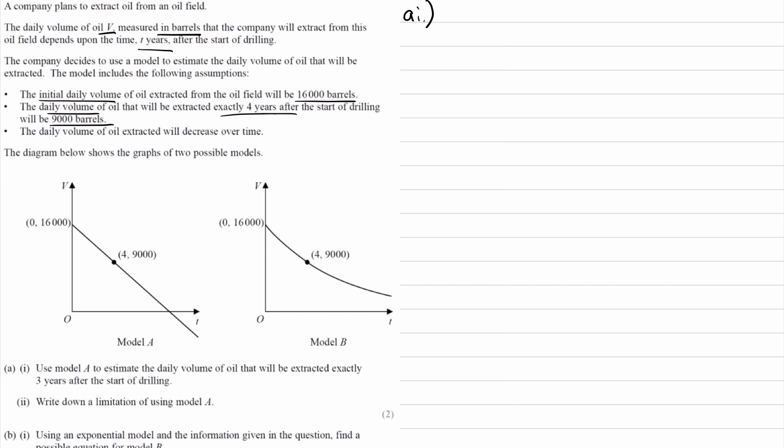We're given two graphs, Model A and Model B. We see that the conditions in those bullet points are followed. We have our initial point of 16,000, a later point of four years and 9,000 barrels, and for both of these models the volume is decreasing over time.